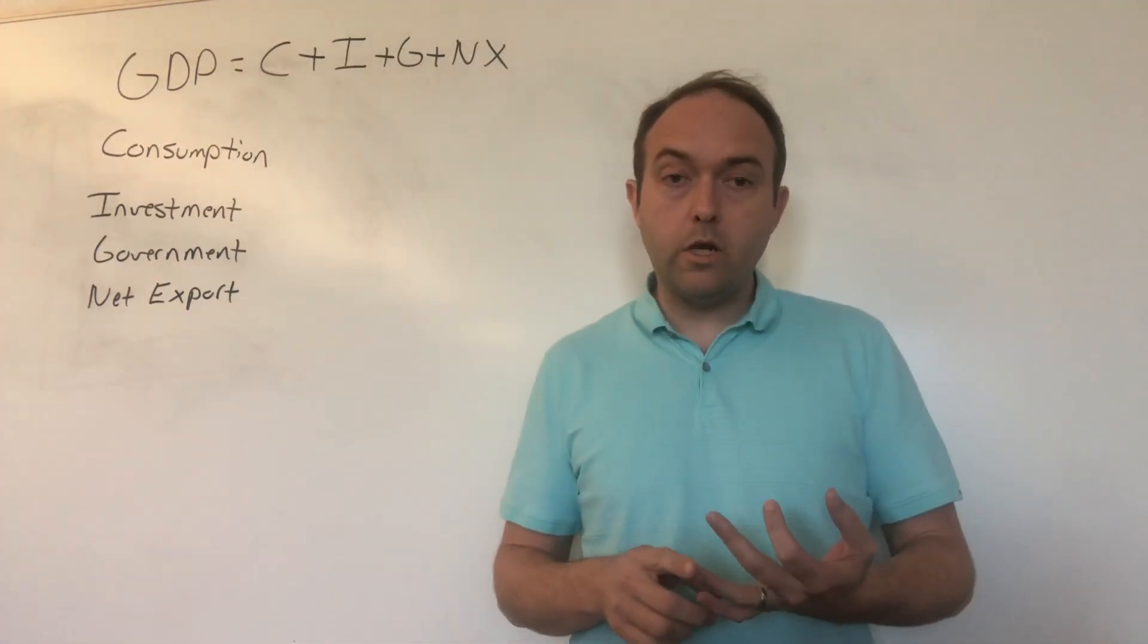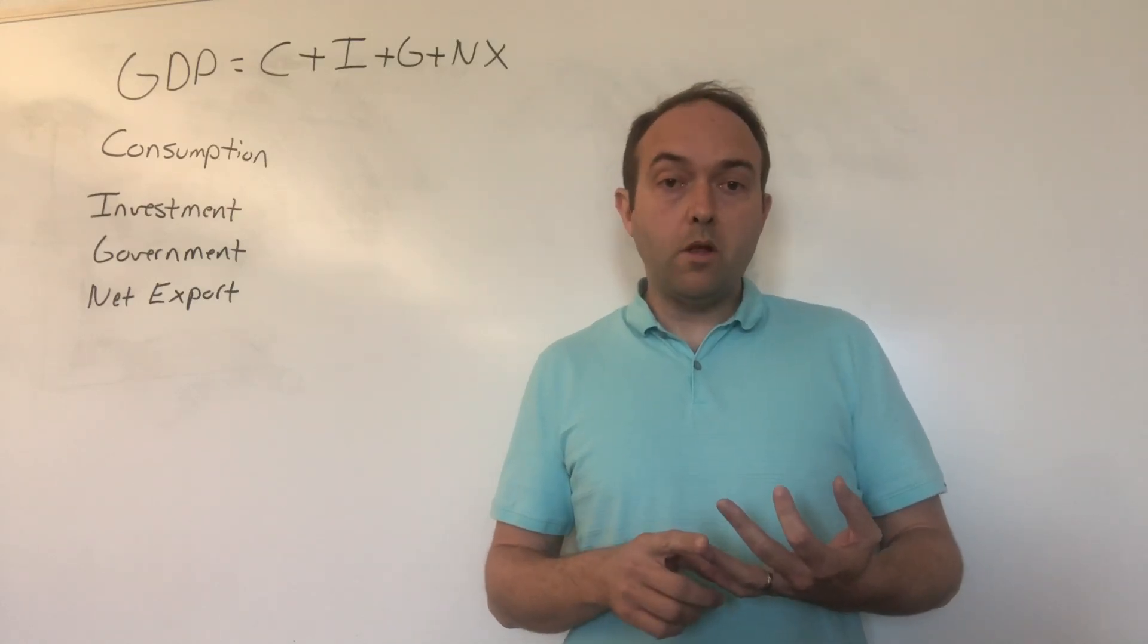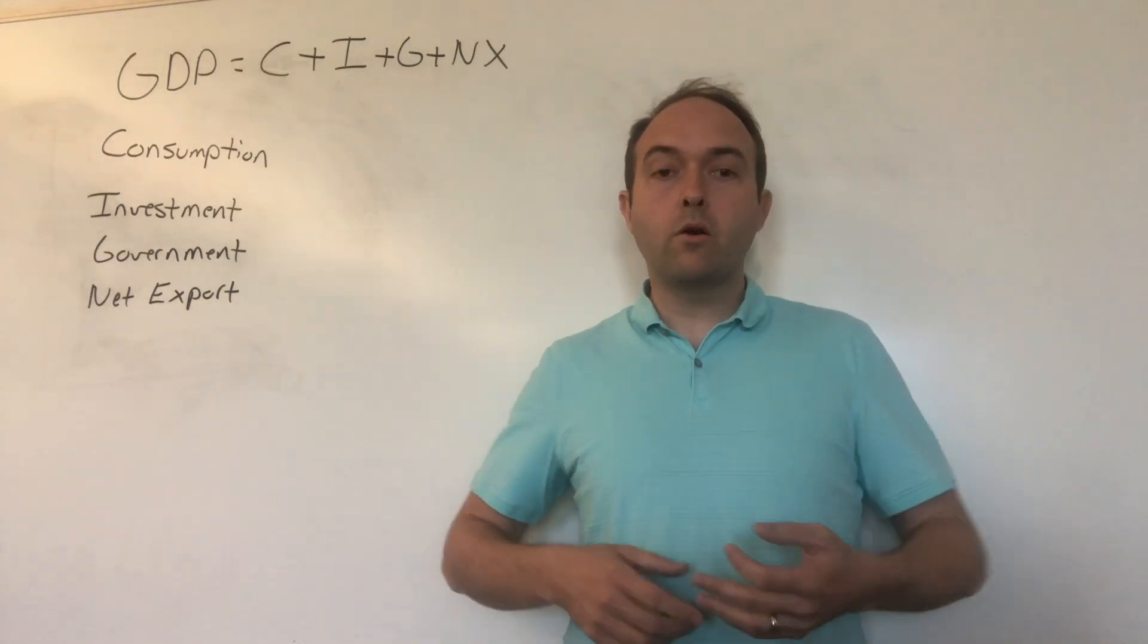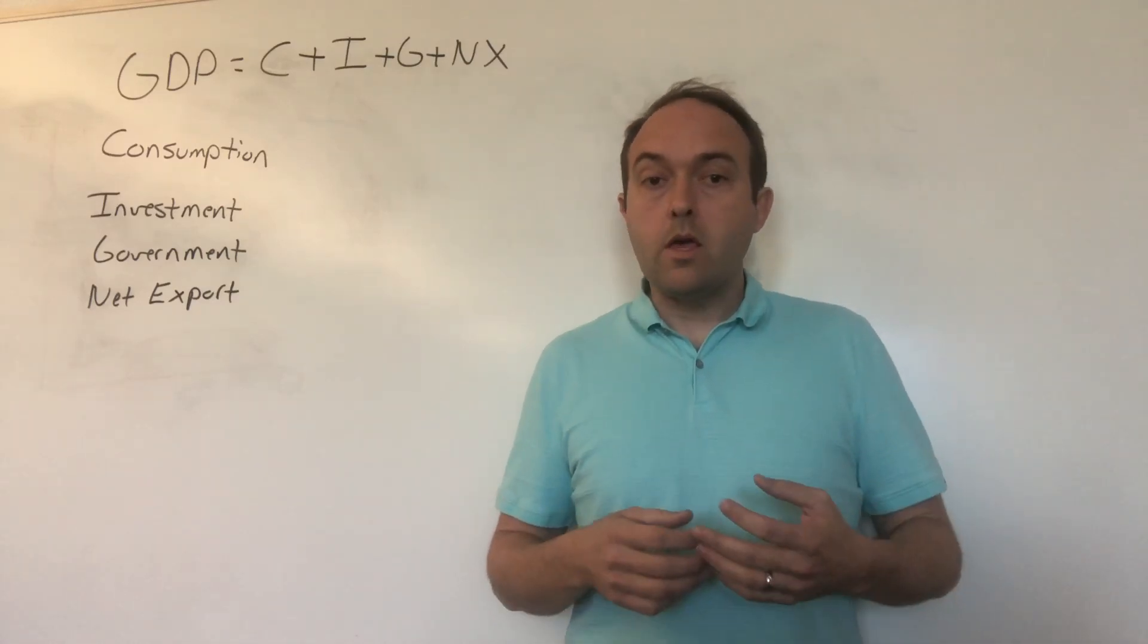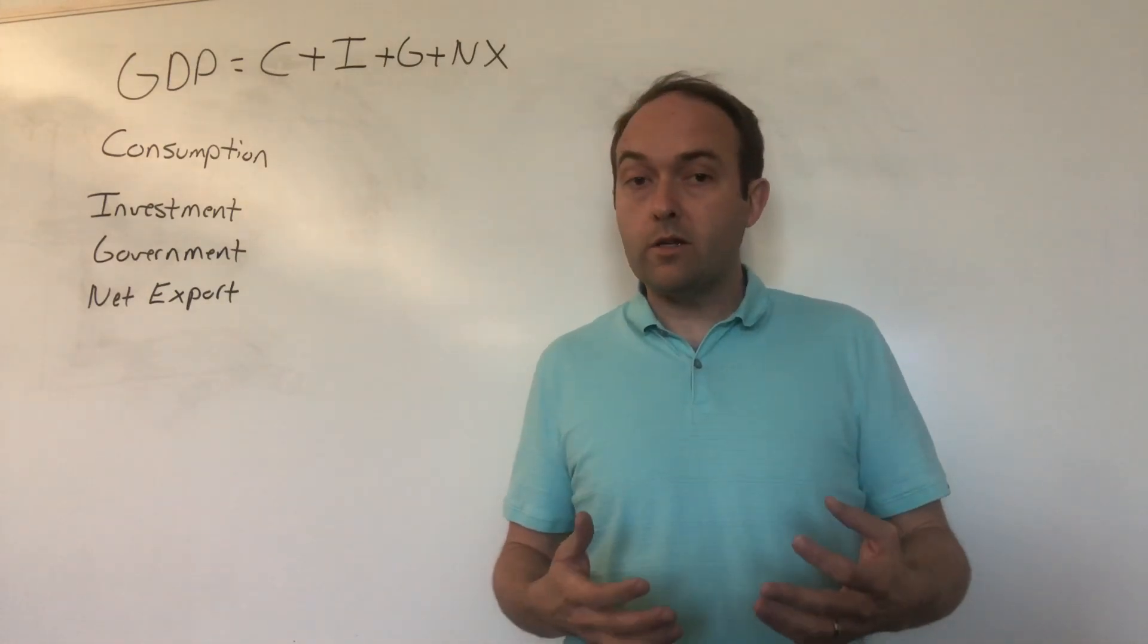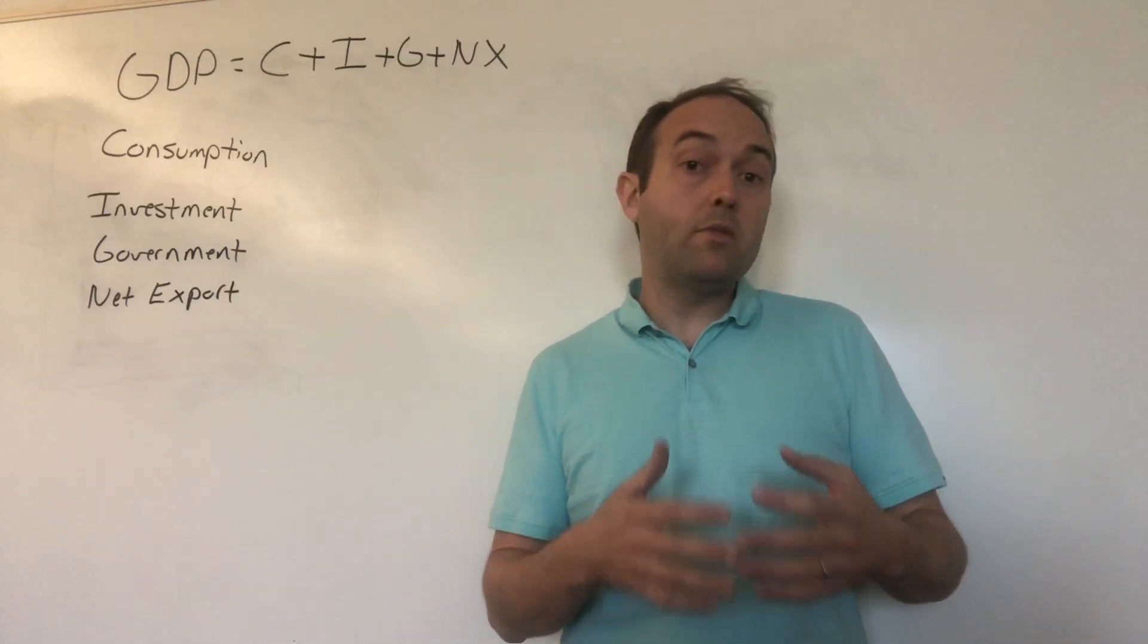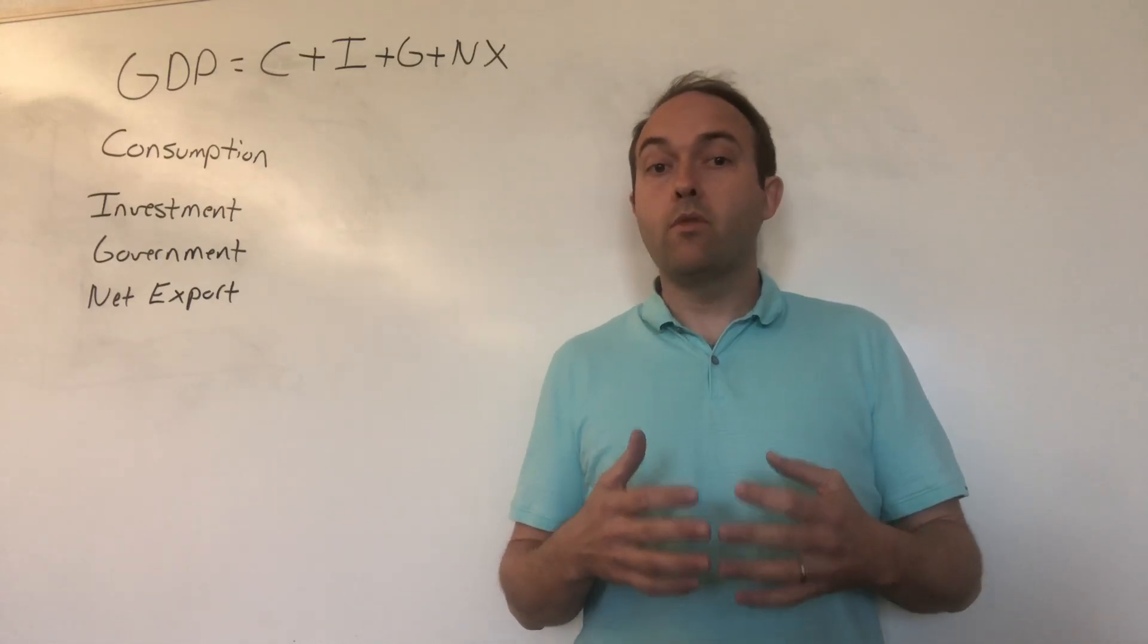The second component of GDP is investment. Investment is expenditures on products that businesses use to make things in the future. The main example we're thinking about here is building new factories or buying new equipment for existing factories. For example, if a company were to spend 10 million dollars building a new factory in 2018, and then for the next 20 years used that factory to make stuff they would later sell, the year that it built that factory, that would count towards the investment component of GDP for that year.